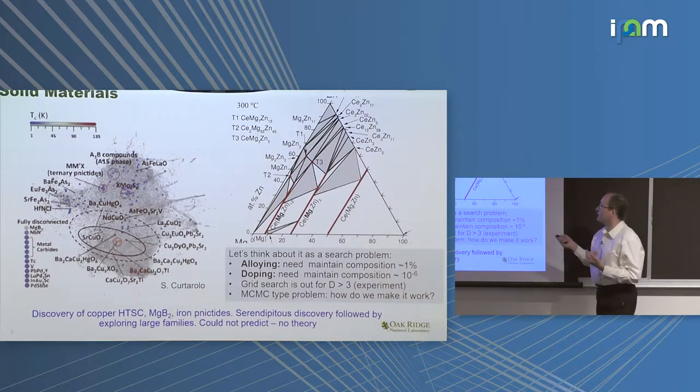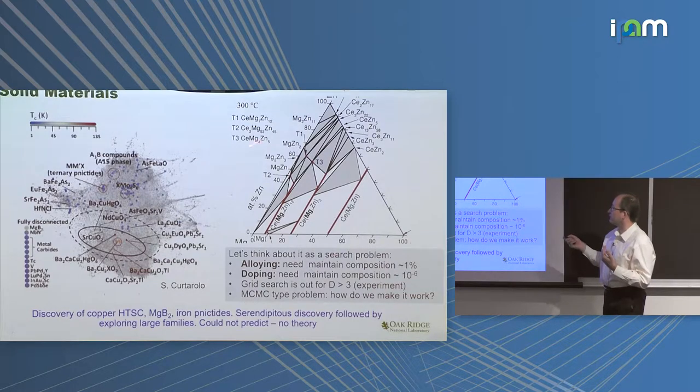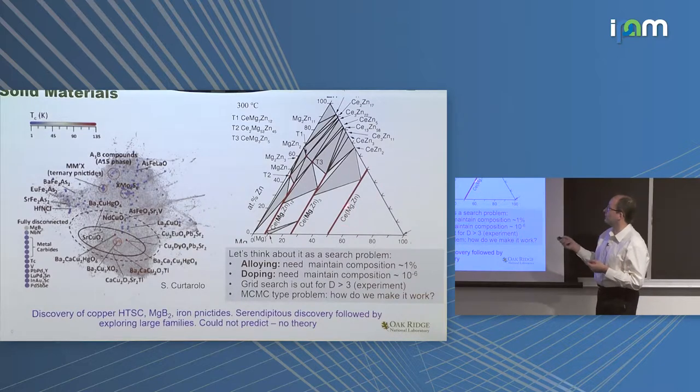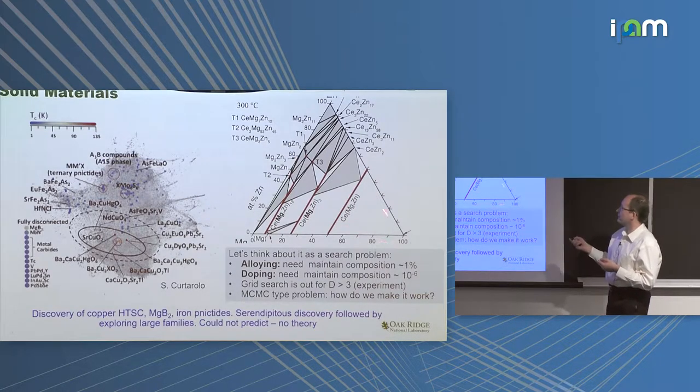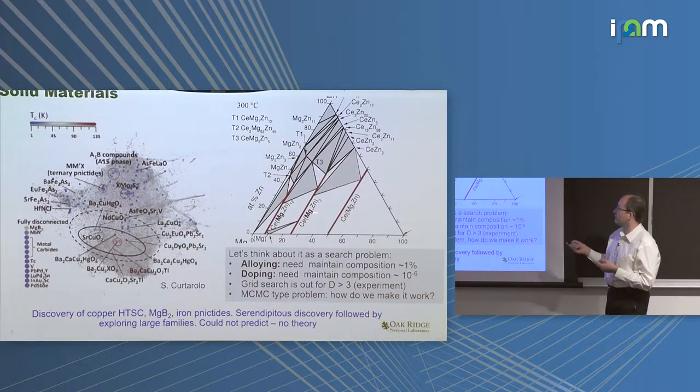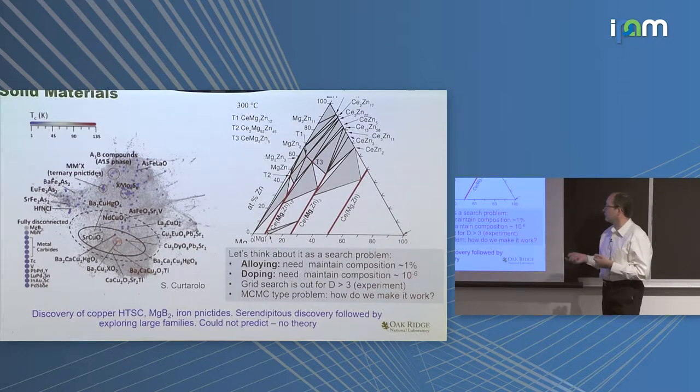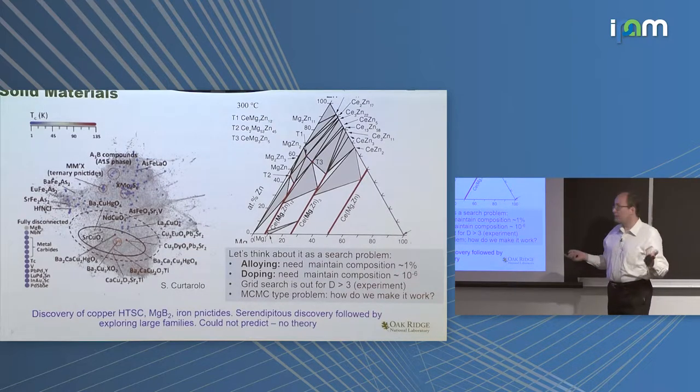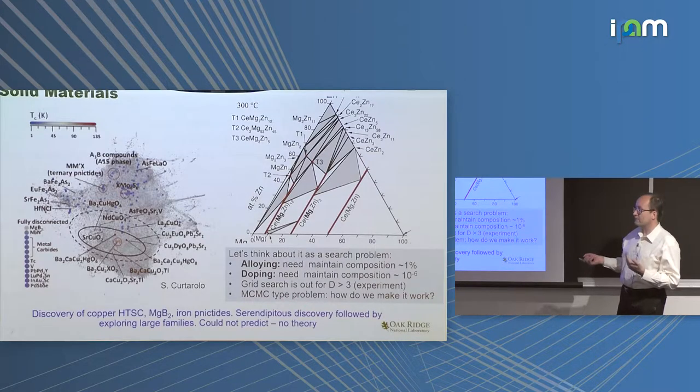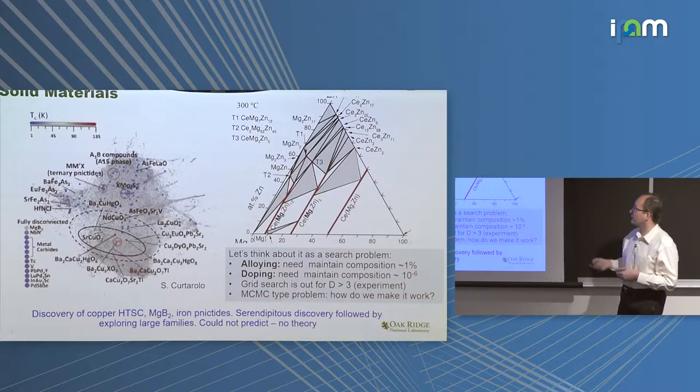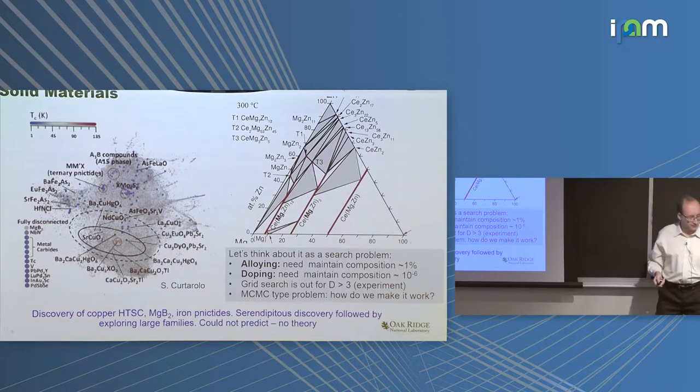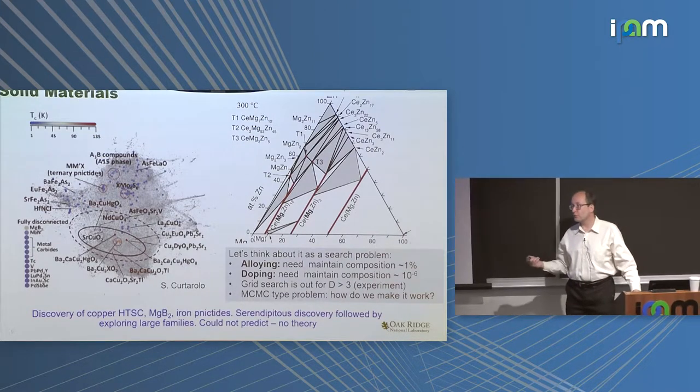If we start to think about even known composition classes as a search process, it becomes very depressing. Look at the phase diagram for real material. Imagine that this is not three-dimensional but five-dimensional phase diagram. Imagine your optimal properties are somewhere in the region within one compositional percent. If you want to go for doping, then you need to maintain things down to 10^-6. Think about it as a search problem.